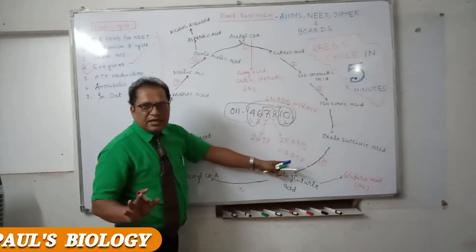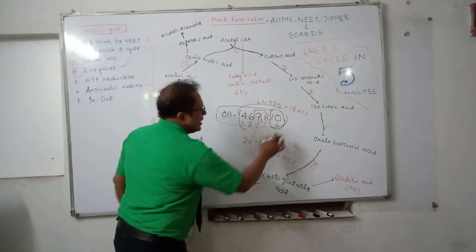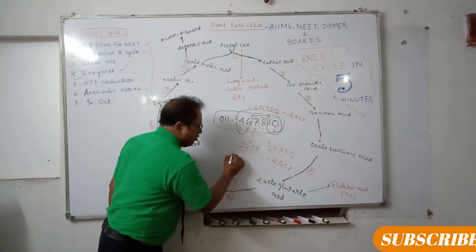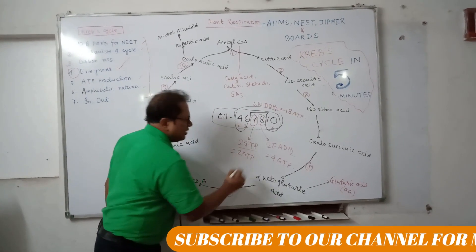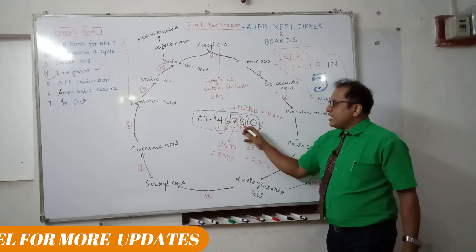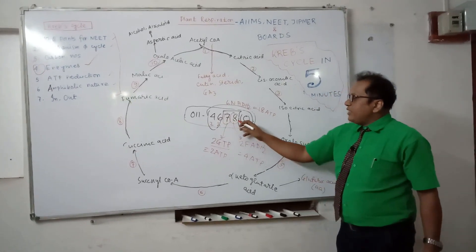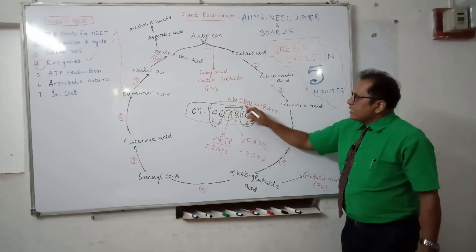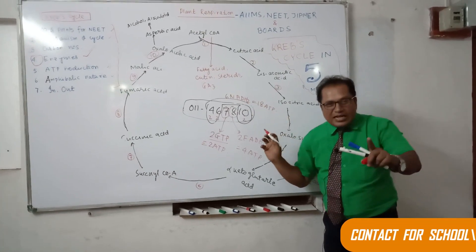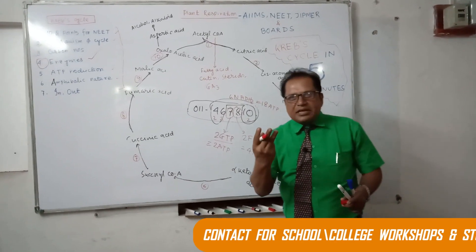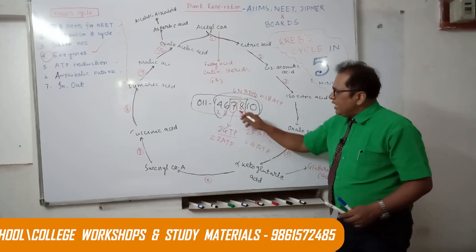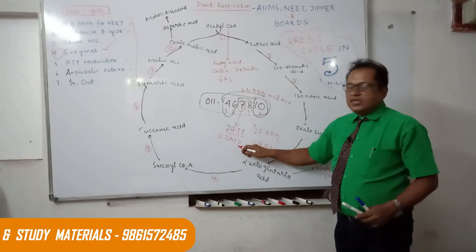So total ATP so far: 18 ATP from NADH2, plus 4 ATP from FADH2, plus 2 ATP from GTP. All of you know the Krebs cycle gives a total of 24 ATP. So here it is: 18 + 4 + 2 = 24 ATP. One NADH2 equals 3 ATP, confirmed.